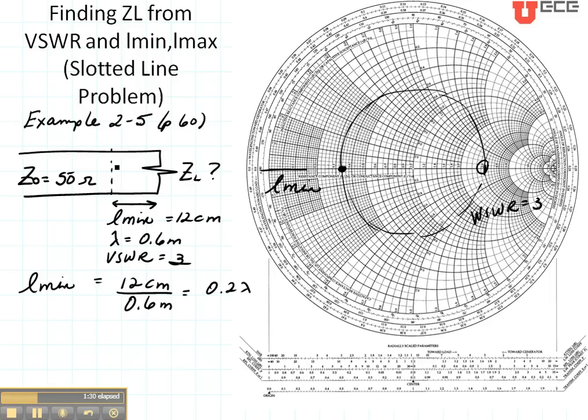So if I'm at L-min and I go towards the load 0.2 wavelengths, I'm going to come to the load. So let's read our value out here. We can see that we are at 0 and we're moving in wavelengths towards the load. So I'm going to go 0.2. See, here's about 0.1, 0.15.